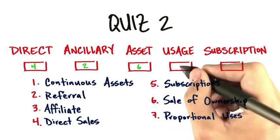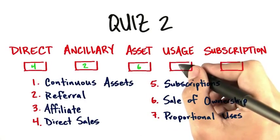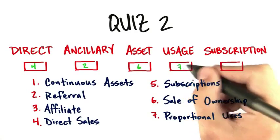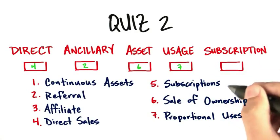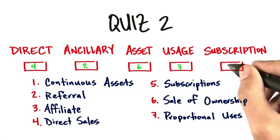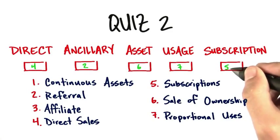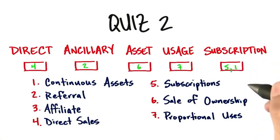Usage would be proportional users, number seven. And subscriptions would certainly be number five, but also could be number one.